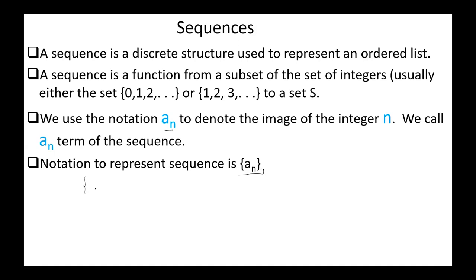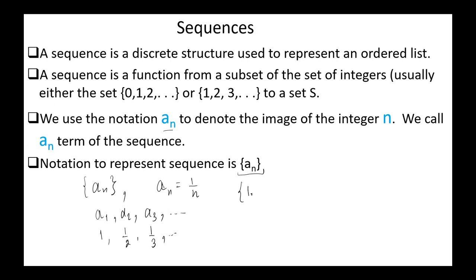Consider for example the sequence {a_N} where a_N equals 1/n. The list of terms beginning with a_1 are: a_1, a_2, a_3, etc., which gives 1, 1/2, 1/3, etc. Or we can write the sequence {a_N} where a_N = 1/n, n in the set of positive integers.